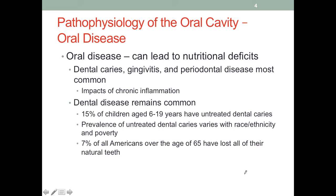Oral disease, no matter which type, can lead to nutritional deficits. Dental caries, gingivitis, and periodontal disease are the most common examples. These conditions involve chronic inflammation and, although they are local infections, they release inflammatory mediators into the bloodstream and can impact the whole body. Reports indicate that flossing properly on a regular basis could reduce systemic inflammation levels, potentially reducing the risk for type 2 diabetes and other chronic non-communicable diseases where inflammation plays a role.